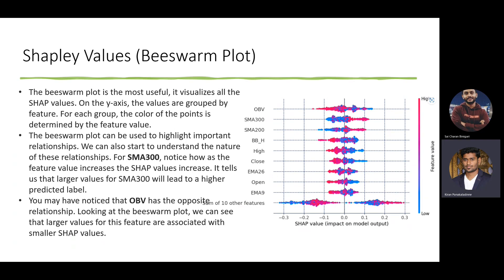We focused on a visualization called the beeswarm plot, which helps us understand the relationship between SHAP values and feature values. For example, for simple moving average with a rolling window of 300, notice how as the feature value increases, the SHAP value also increases, indicating that larger values for SMA 300 lead to a higher predicted label. Similarly, for the OBV feature, it has the opposite relationship.